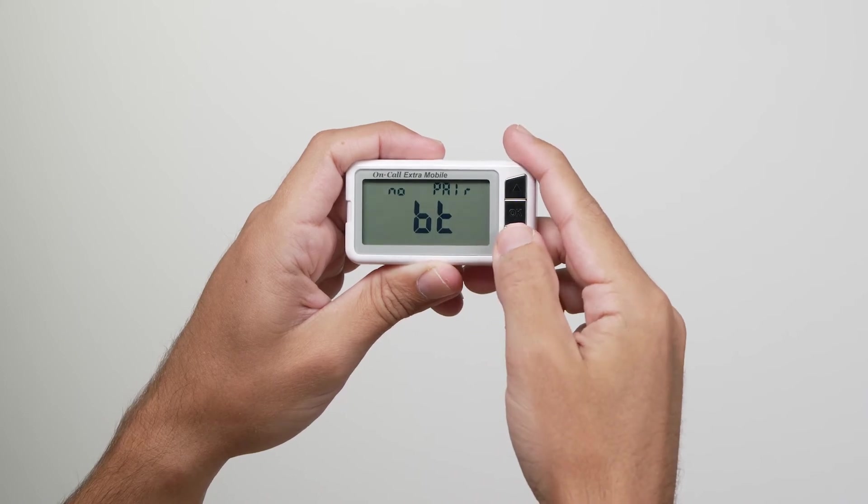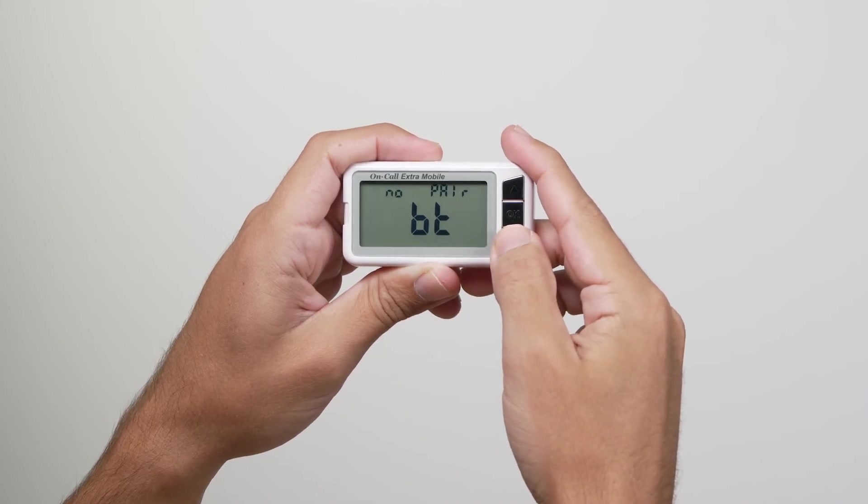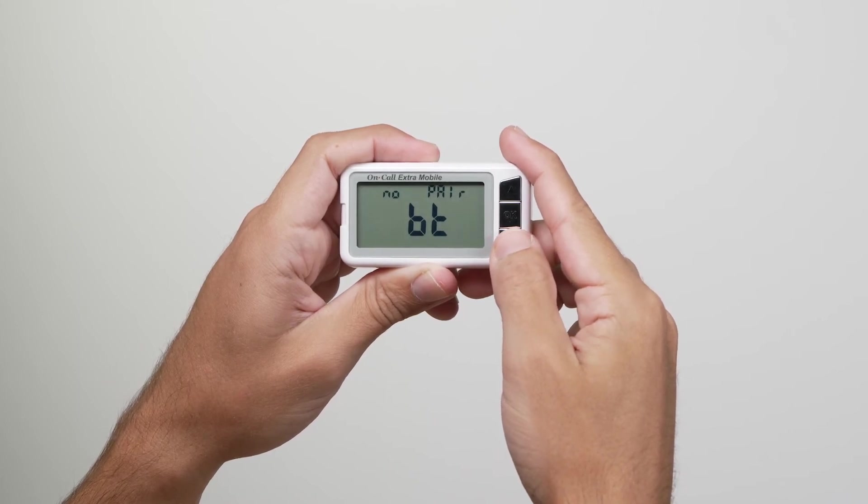From this setting, BT will appear on the screen with either yes or no and pair at the top of the display. Press the up arrow or down arrow button to change the setting.